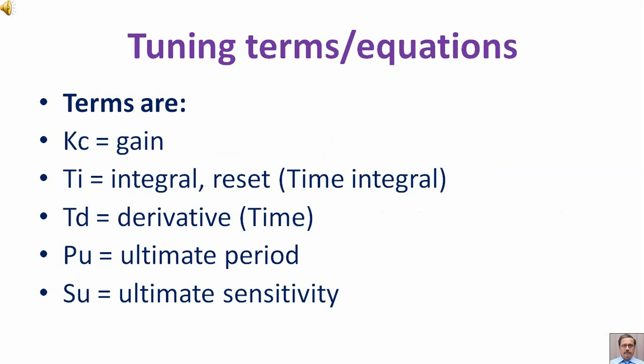Tuning terms/equations: K subscript C is equal to gain, T subscript I is the integral or reset time, T subscript D is derivative time, P subscript U is ultimate period, S subscript U is the ultimate sensitivity.